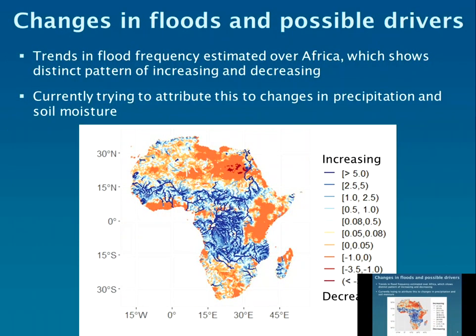We've also been looking at changes in floods and the reasons for those changes. This work covers the whole of Africa, looking at trends in flood frequency. We see distinct patterns of increasing and decreasing frequency depending on location — for example, large basins such as the Congo, Niger, and Nile show increasing flood frequency. We've been attributing these changes by examining antecedent precipitation and soil moisture, with climate variability being the primary driver of large-scale flooding changes.